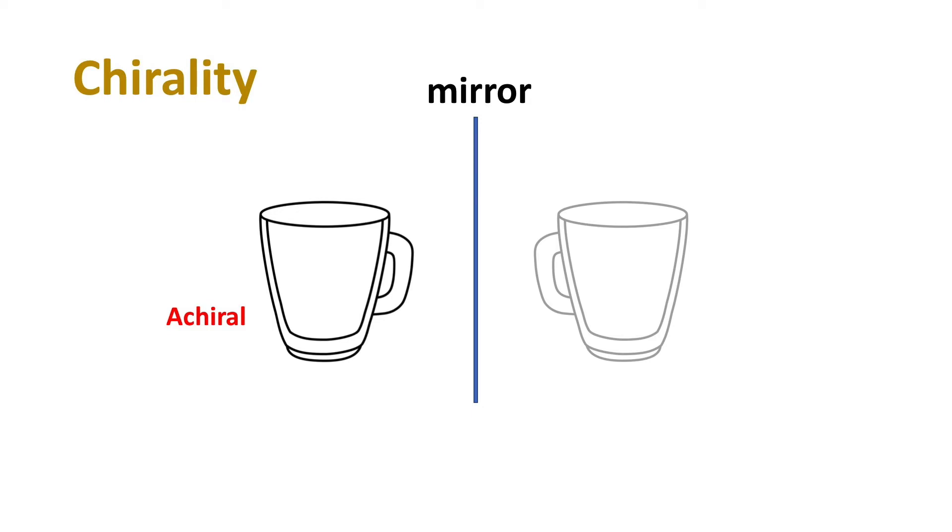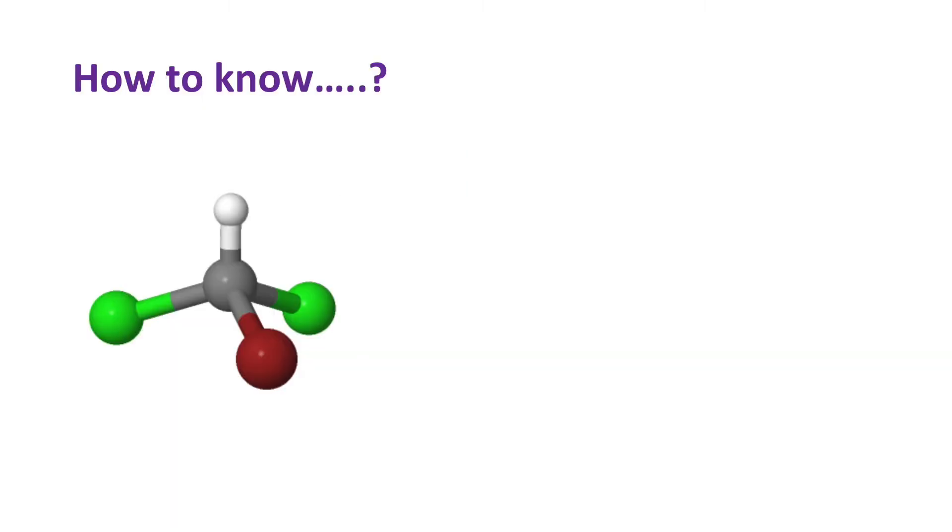The achiral objects are those objects that can superpose on its mirror image. Back to our discussion. How can we know if a molecule is chiral or achiral?